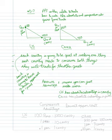In this example, China has an absolute advantage in pens, because China can make more pens than the U.S. can. Note that a country like China or the U.S. could actually have an absolute advantage in both. Absolute advantage means nothing for how a country is going to choose to trade. What we need to find is the comparative advantage.